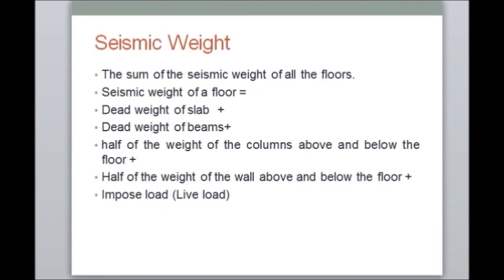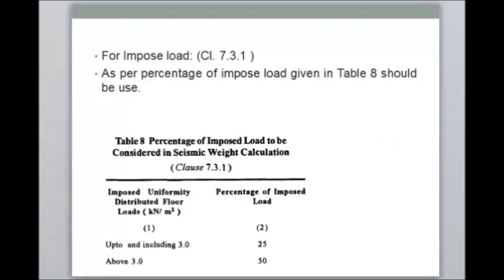Seismic weight is the self-weight of all structural components of the building — slabs, beams, columns, walls, and shear walls if any. In seismic weight we also have to include the imposed load acting on the building. As per IS 1893 2002, Table 8 specifies how much percentage of the imposed load to include: if the live load is less than or equal to 3 kN/m², include only 25% of the imposed load; if it is more than 3 kN/m², include 50% of the live load.